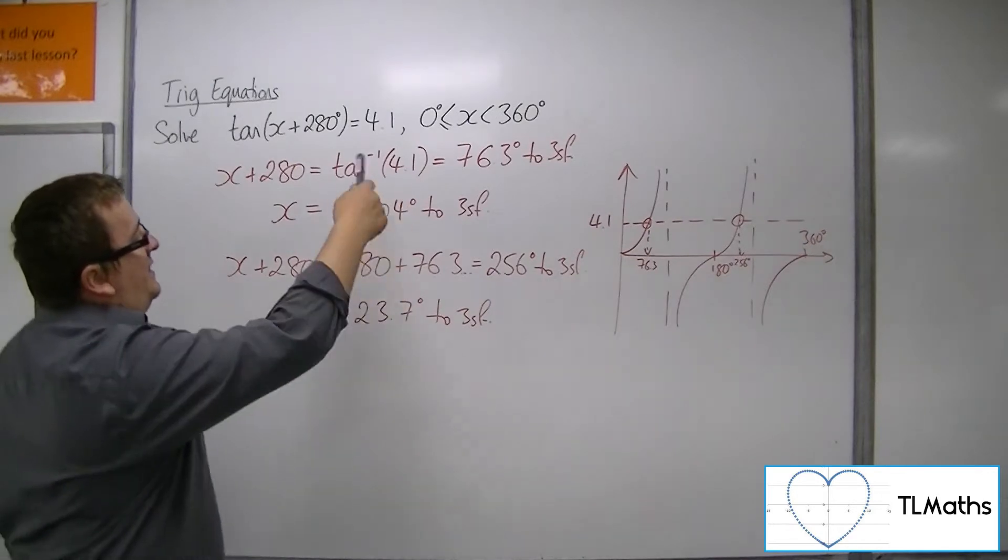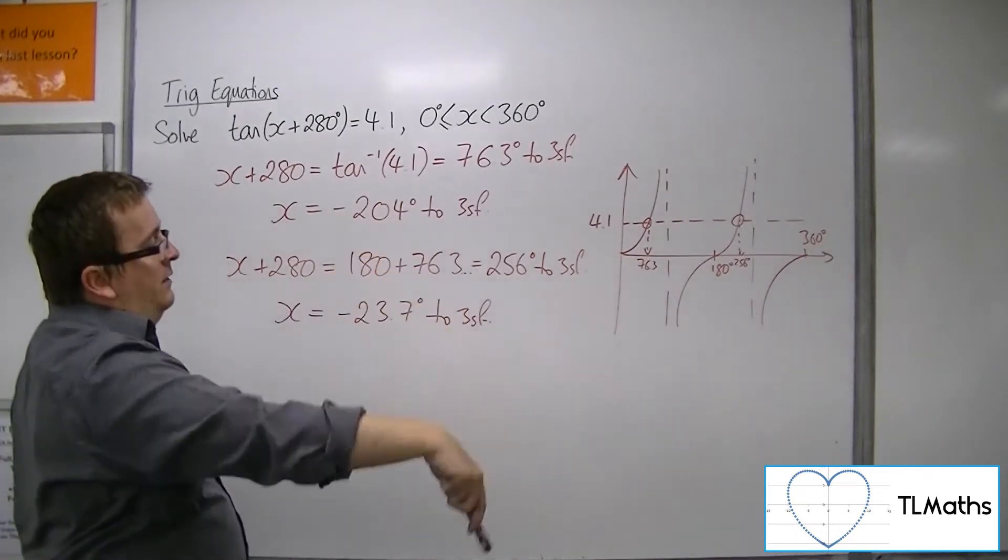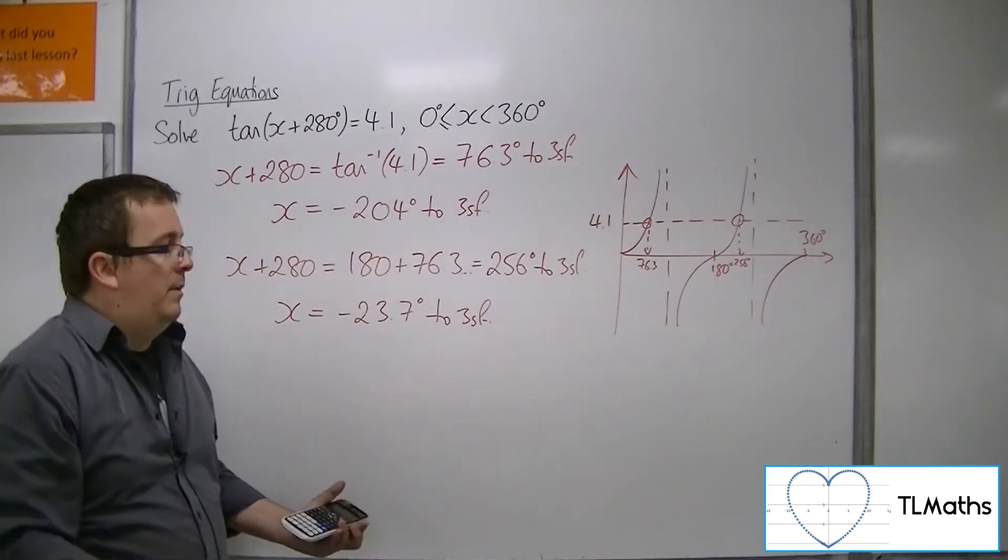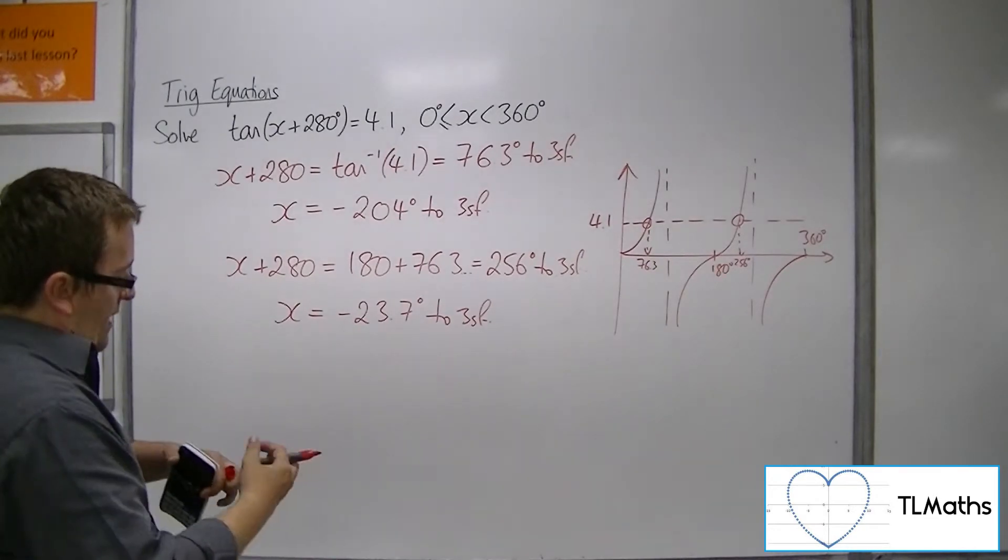So, really, we only need to find one of these and then add 180 on each time, OK, but that's the way it goes.